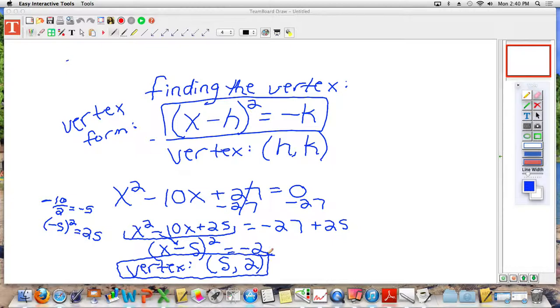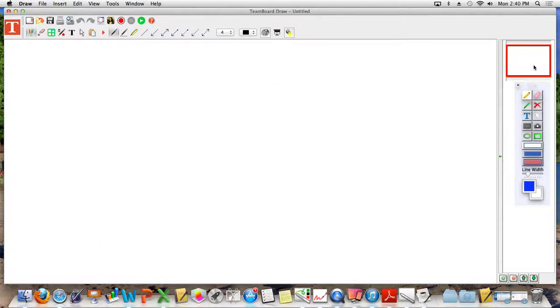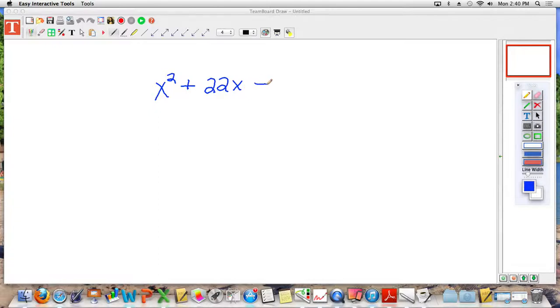I would like to do one more example, and then I'm going to let you guys work on this yourself. Let's try that again, let's do one more example. x squared plus 22x minus 7 equals 0.